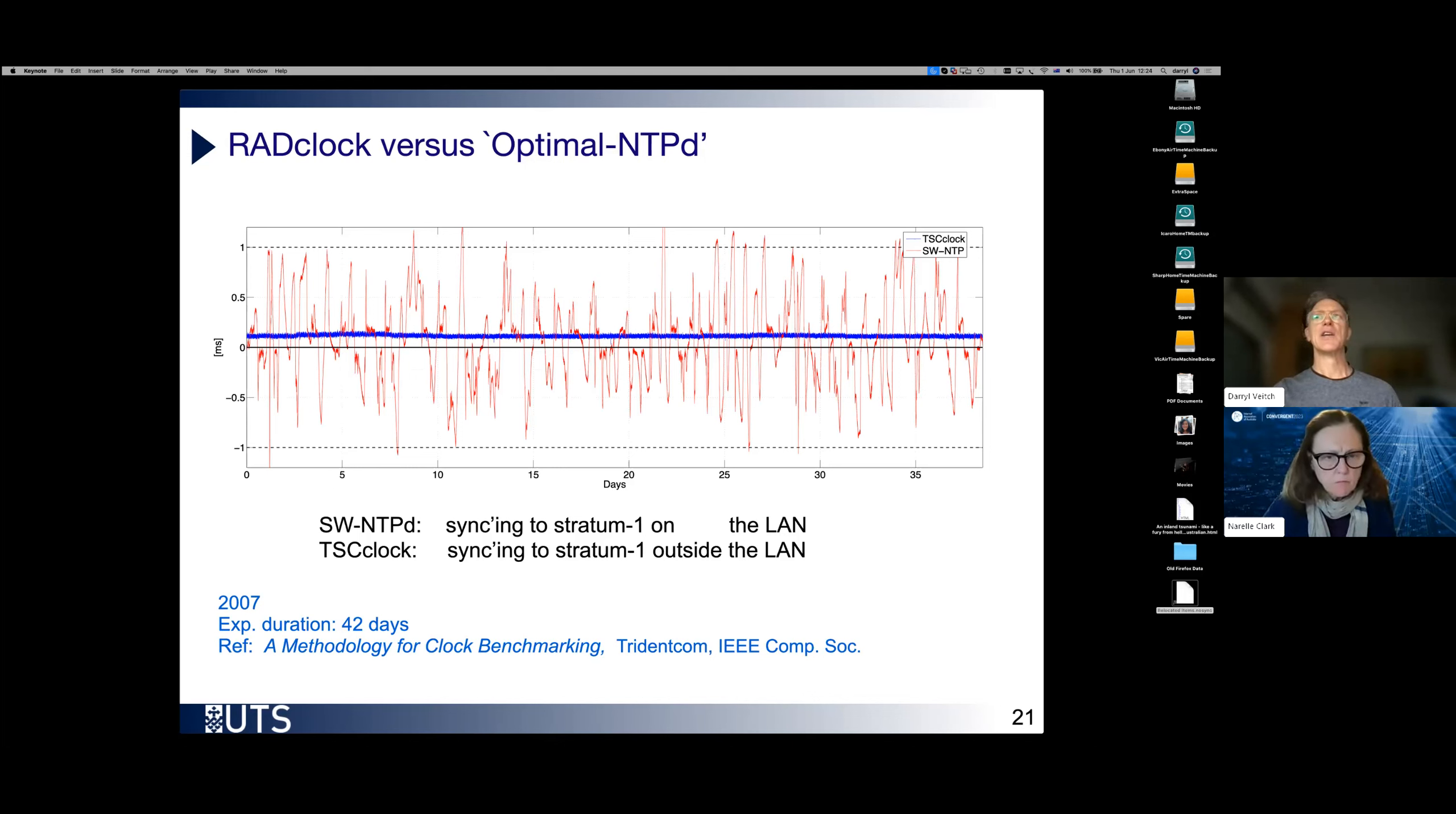So here is one plot based on what we call an external comparison, comparing what the normal NTPD solution is, a stratum two synchronizing to a stratum one which is on the very same LAN, very close by, compared to RADclock, which at the time was called TSC clock because it used the TSC register as its counter, RADclock syncing also to a stratum one but outside the LAN. And this is an experiment over 42 days. So I think the plot kind of speaks for itself. We see this very tight, very low variability in the RADclock compared to the status quo.